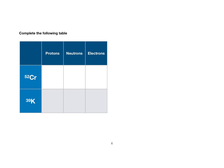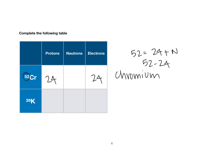For any element, as long as we have the mass number, we can determine how many protons, neutrons, and electrons there are. For chromium, symbol Cr, it's element 24, so it has 24 protons and 24 electrons. The mass number shown is 52, so the number of neutrons is 52 minus 24, which gives you 28.